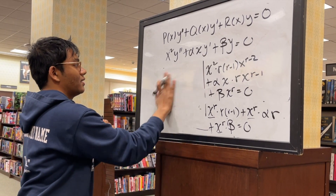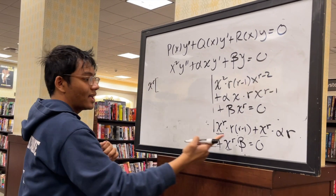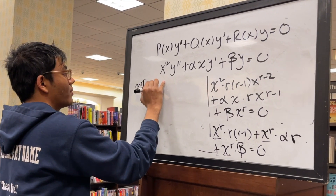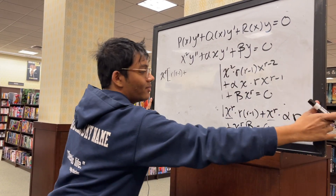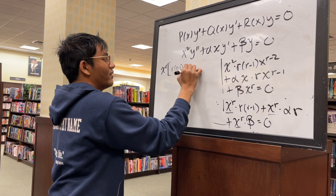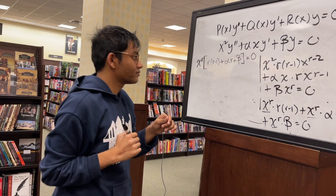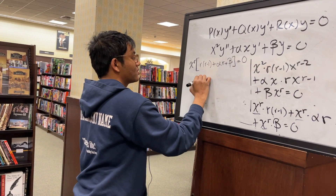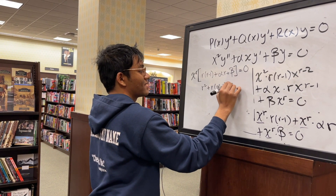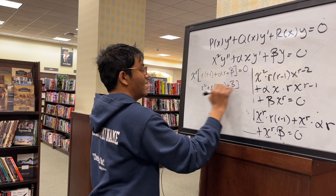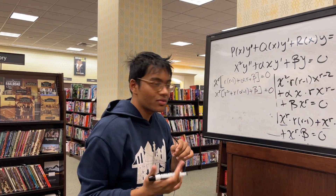Factoring out x to the r, the characteristic equation is r(r-1) plus alpha r plus beta equals 0. Expanding, this gives r squared plus (alpha minus 1)r plus beta equals 0, all inside the factor of x to the r equals 0. This is just a quadratic equation in r.